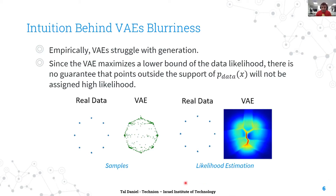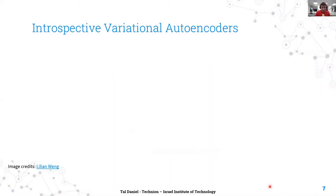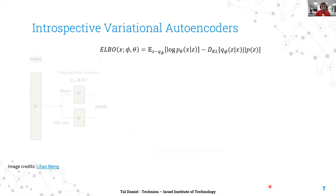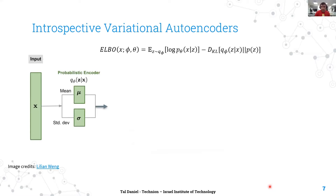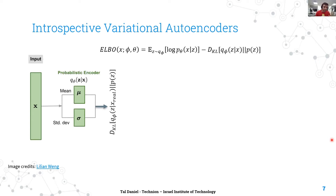So how can we tell the VAE what are bad samples? One way would be similar to GANs — add a discriminator and use its signal to tell the VAE what are real and fake samples. Another way is using an introspective approach, which is the focus of this work, and this means the method does not require an additional discriminator. Introspective means examining yourself for self-analysis. In the VAE, we already have a generative model — the decoder. We now assign the original encoder the role of discriminating between real and generated data, and we explicitly tell the encoder to push away fake data from the prior.